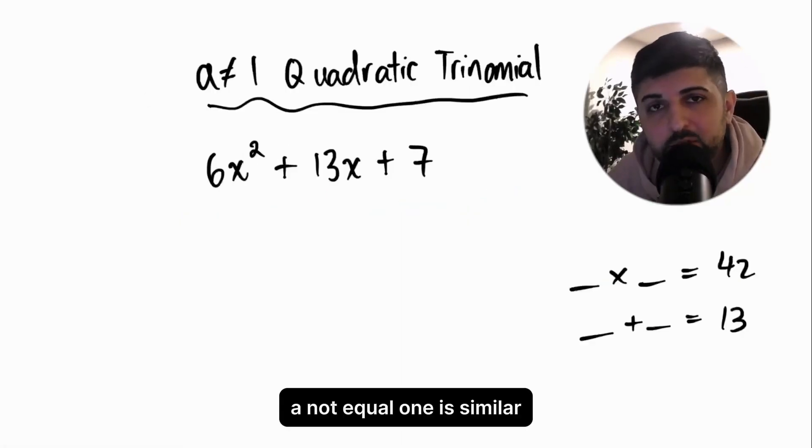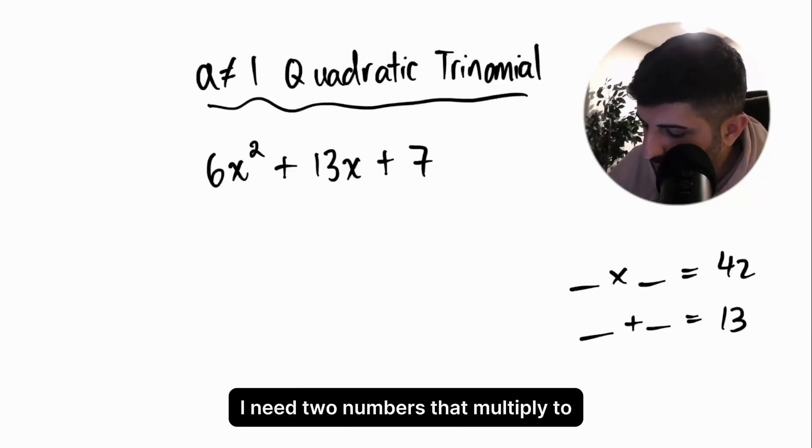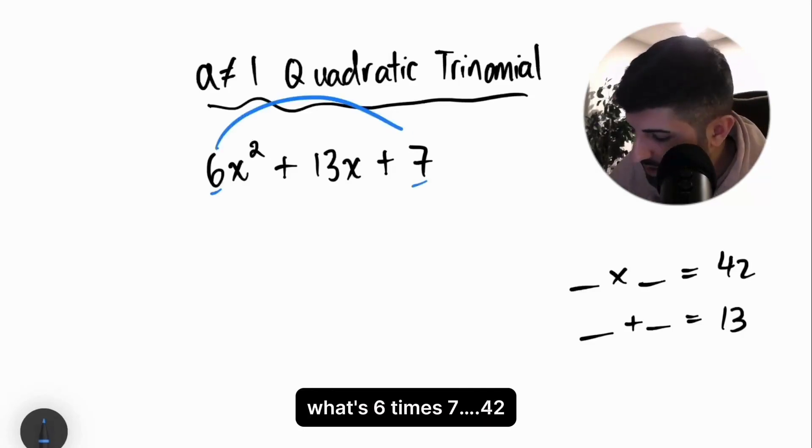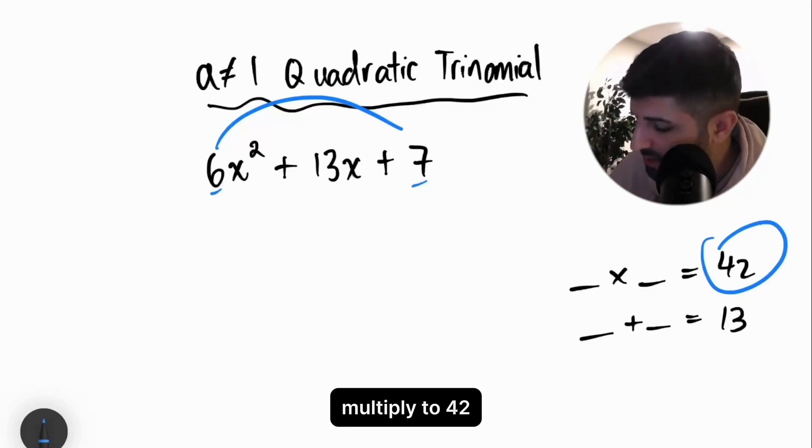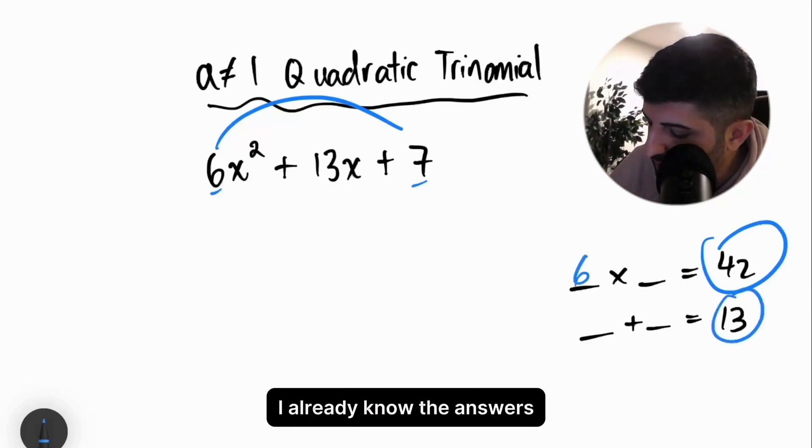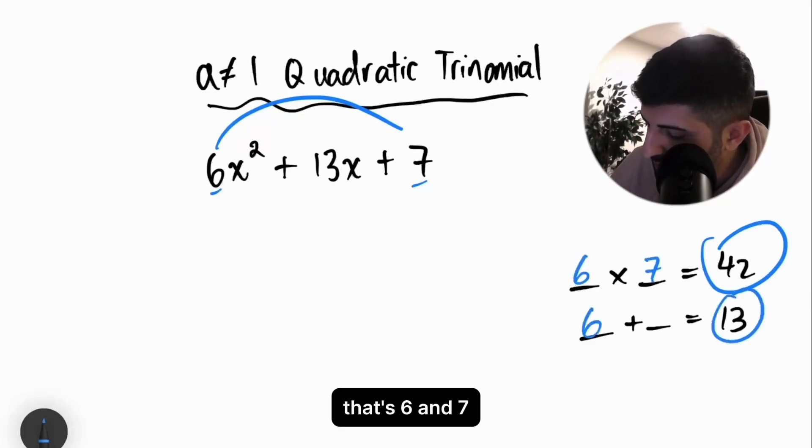a not equal 1 is similar. It just requires more of a process. I need two numbers that multiply to 6 times 7. What's 6 times 7? 42. I need two numbers that multiply to 42, but add to 13. I already know the answers. That's 6 and 7. Both are positive.